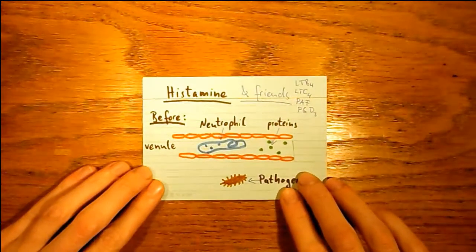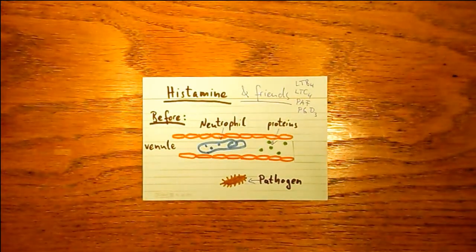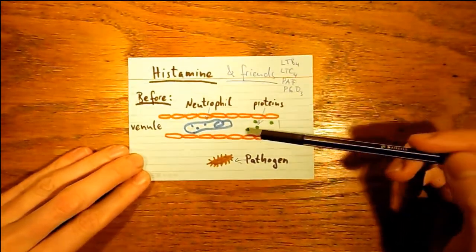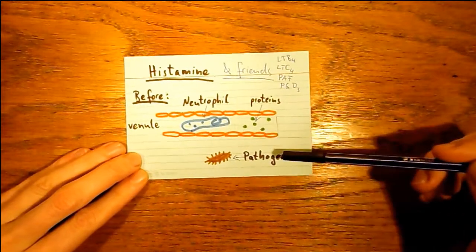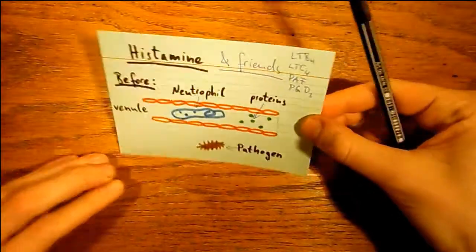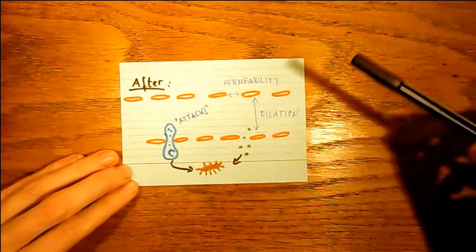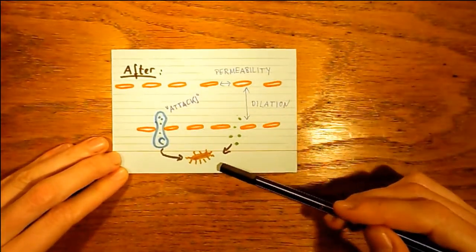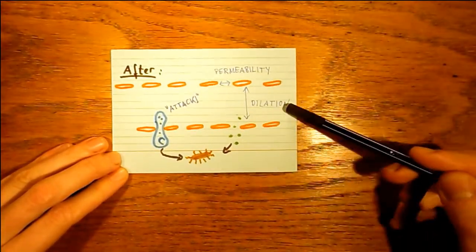So what do these cells try to accomplish? For one, they get more supplies to the site of infection. They make sure that white blood cells and defense proteins can leave the blood vessels and get into the tissue where they are needed. To do that, they release histamine and some other agents that dilate arteries and capillaries and also make them more permeable.